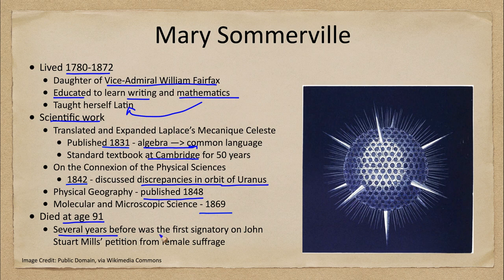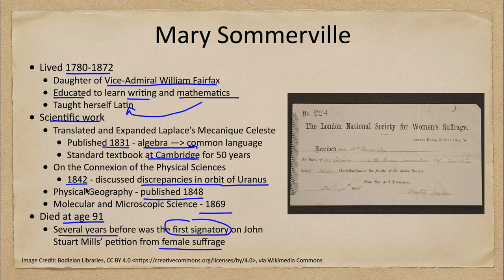She died at the age of 91, and several years before her death she was actually the very first signatory on John Stuart Mill's petition for female suffrage. While that petition was not successful, she was so well known and prominent in the field that she was the first to sign it. We have one of her signatures here, on the contribution to the Society for Women's Suffrage, advocating for women's right to vote in England.